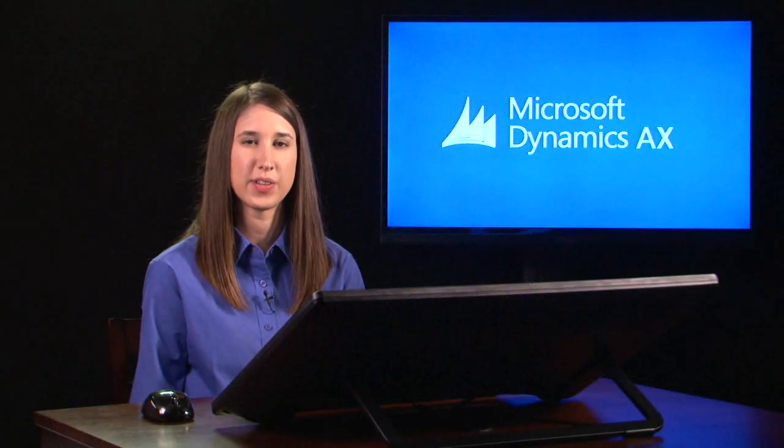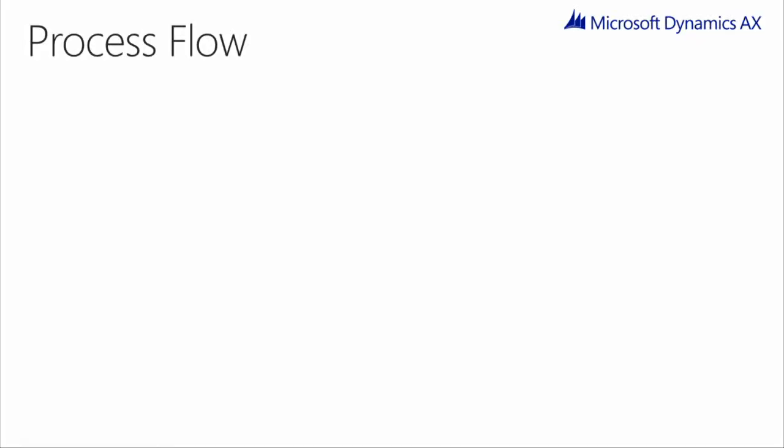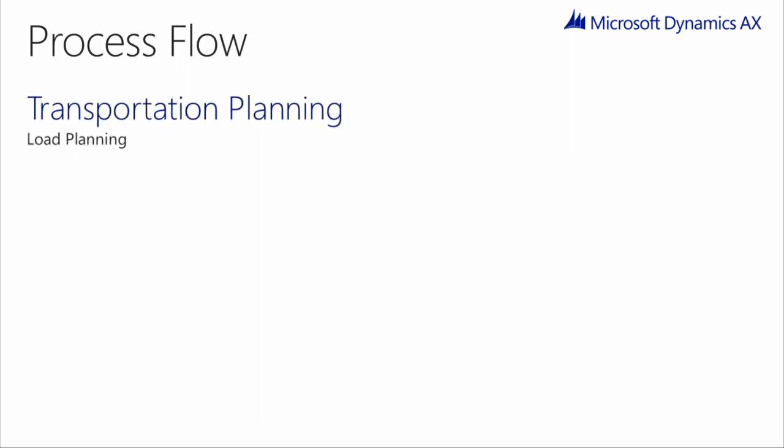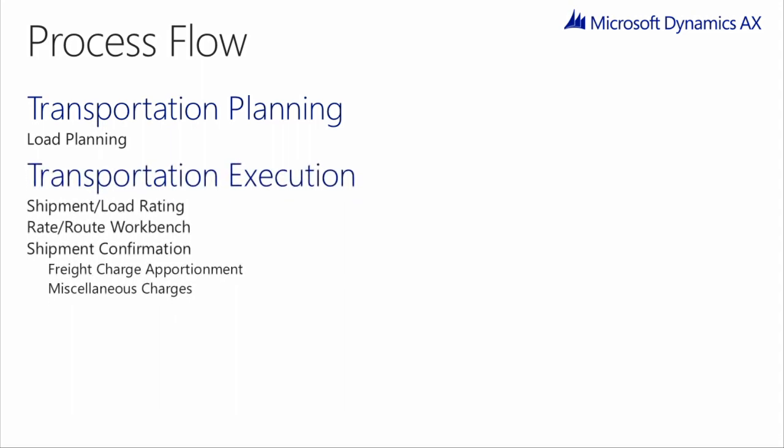Having covered the general concepts, let's take a deeper look into the process flow. In Transportation Management in AX, we will start the process flow by planning our shipments or loads. We can perform this planning process through the load planning workbench tool. Once we have done all of our planning, we will move on to the rating and routing of our load. We can do this through the rate route workbench within the Transportation Management in AX module. The rating and routing process is how we find our rate and assign it to the planned load, along with any routes.